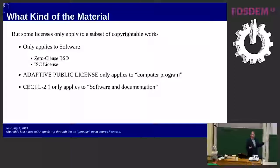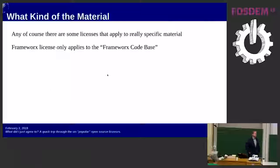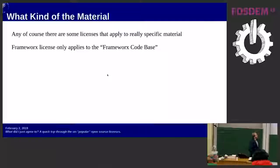There are less common licenses too: the Adaptive Public License only applies to computer programs, whatever that means — they don't define it. The CESA license only applies to software and documentation. And then there are non-reusable licenses like the Framework's License, which only applies to the Framework's code base — a license you can't actually reuse anywhere else. So you can't just pick up any OSI-approved license and use it for anything; if you tried to license your material under the Framework's License, you wouldn't actually be licensing anything at all.